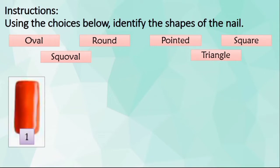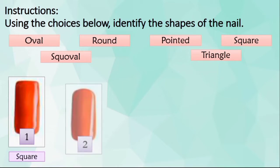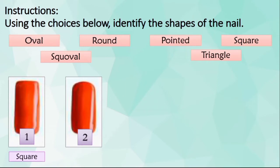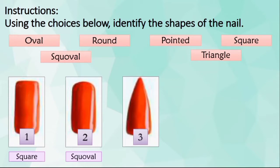Number 1. What do you think is the shape of this nail? The correct answer is square. Number 2. What do you think is the shape of this nail? The correct answer is squoval. Number 3. What is the shape of this nail? The correct answer is pointed.